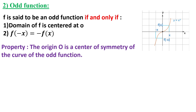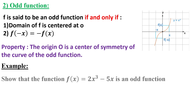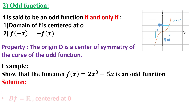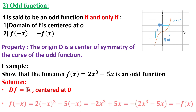Let's now see this example: we need to show that f(x) = 2x³ − 5x is an odd function. We only need to prove the two conditions — that the domain is centered at zero and that f(−x) = −f(x) — as shown in the solution.